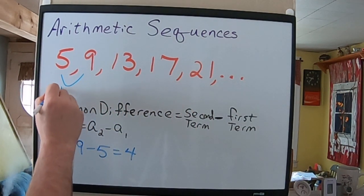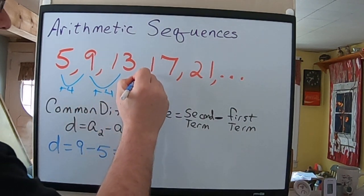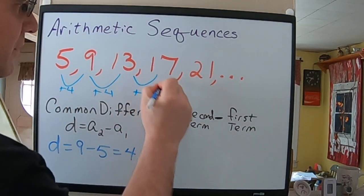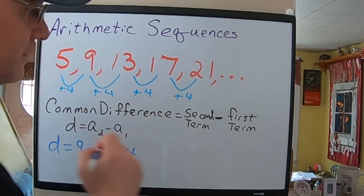So, going from here to here, you're adding 4, plus 4, plus 4, plus 4.